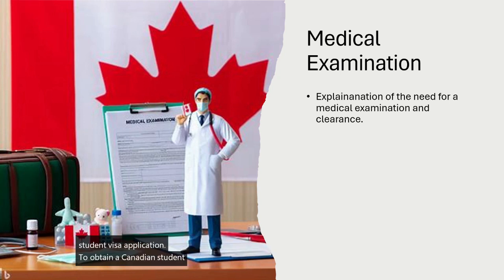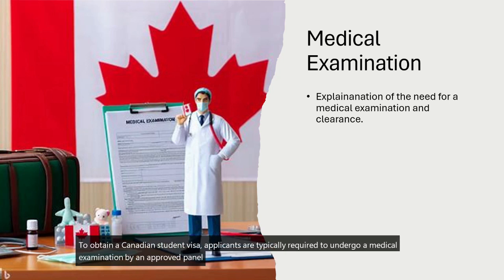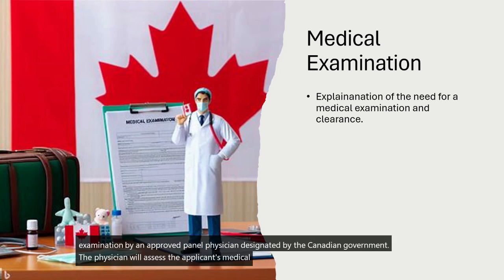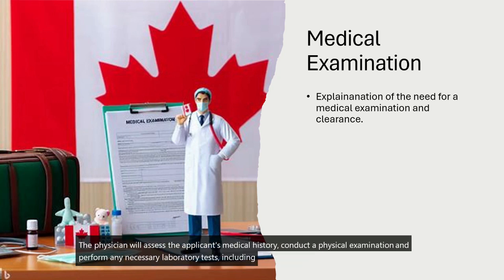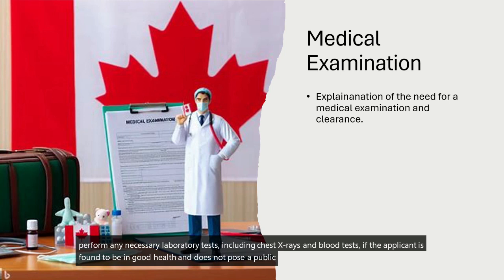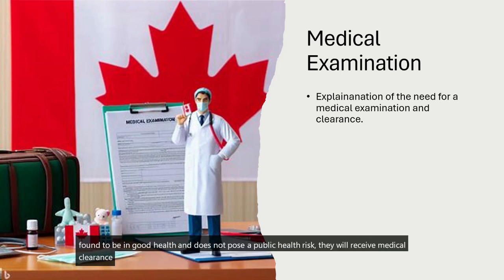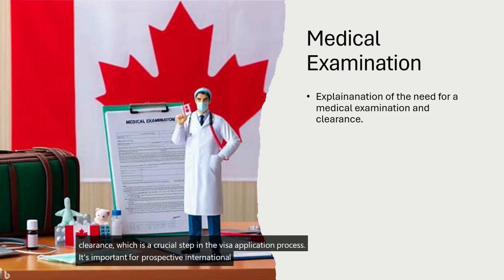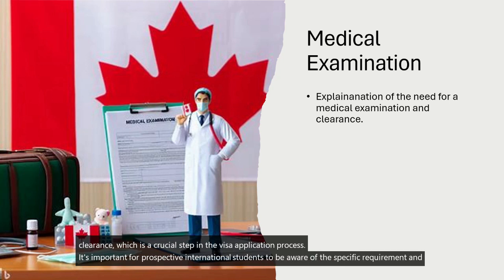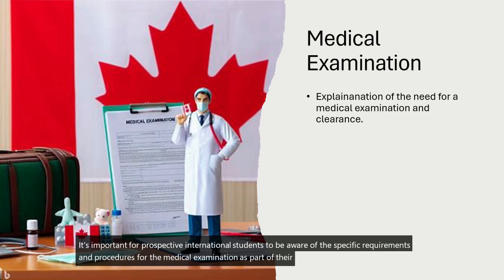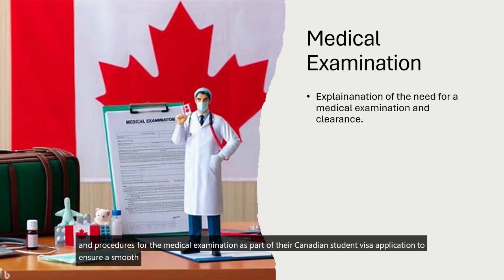To obtain a Canadian student visa, applicants are typically required to undergo a medical examination by an approved panel physician designated by the Canadian government. The physician will assess the applicant's medical history, conduct a physical examination, and perform any necessary laboratory tests, including chest X-rays and blood tests. If the applicant is found to be in good health and does not pose a public health risk, they will receive medical clearance, which is a crucial step in the visa application process.